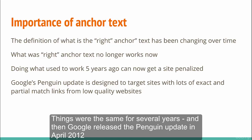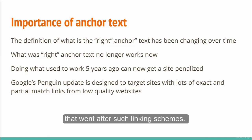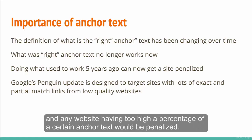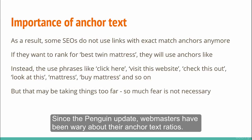Things were the same for several years, and then Google released the Penguin update in April 2012 that went after such linking schemes. Google started measuring anchor text ratios, and any website having too high a percentage of a certain anchor text would be penalized. Since the Penguin update, webmasters have been wary about anchor text ratios.